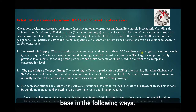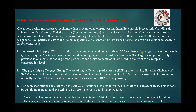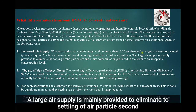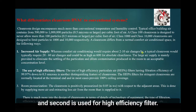A clean room differs from a normal comfort air conditioning system in the following ways. First, increased air supply: whereas comfort air conditioning requires about 10 air changes per hour, a typical clean room requires 20 to 60 air changes and could be as high as 600 for the most stringent clean rooms. The large air supply is mainly provided to eliminate the settling of particulate and dilute contamination to an acceptable concentration level.